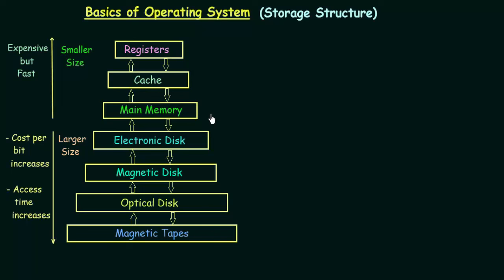Main memory is fast, but its size is limited and it is volatile in nature. Because the size of main memory is small, you cannot store all your programs and data in it. For that purpose we have secondary memory, where we can store all our data. When something has to be executed, it is loaded into the main memory and then executed.